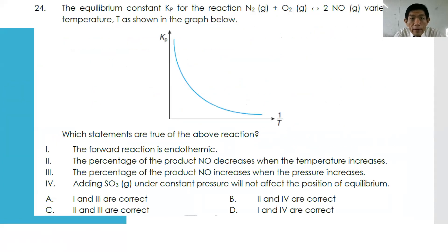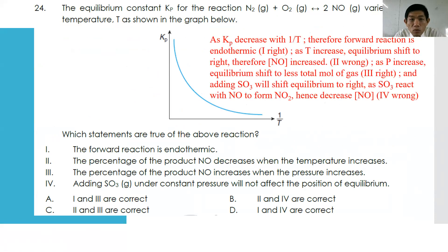Number twenty-four: Kp for N₂ + O₂ → 2NO varies with temperature as shown in the graph. Again, the x-axis is 1/T — another tricky question. Since Kp decreases as 1/T increases, Kp increases as temperature increases. This indicates the forward reaction is endothermic. Statement one: forward reaction is endothermic — correct. If equilibrium shifts to the right, NO increases — statement two is wrong.